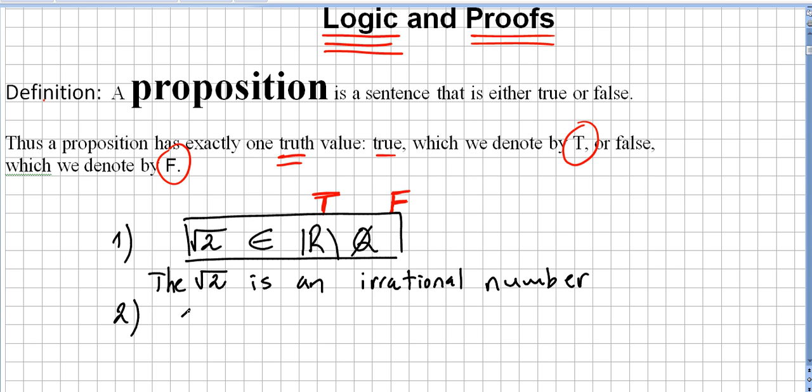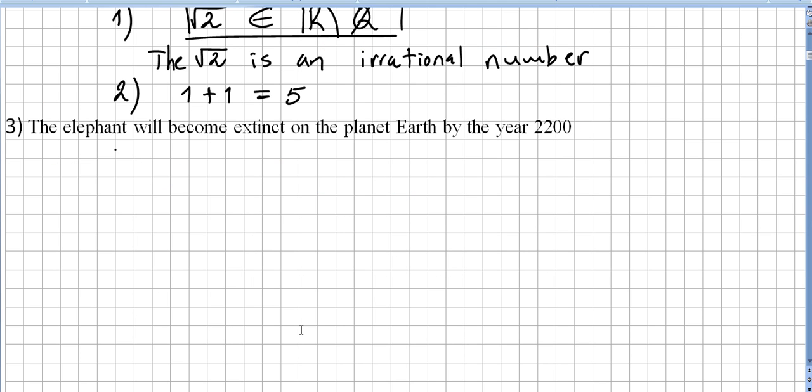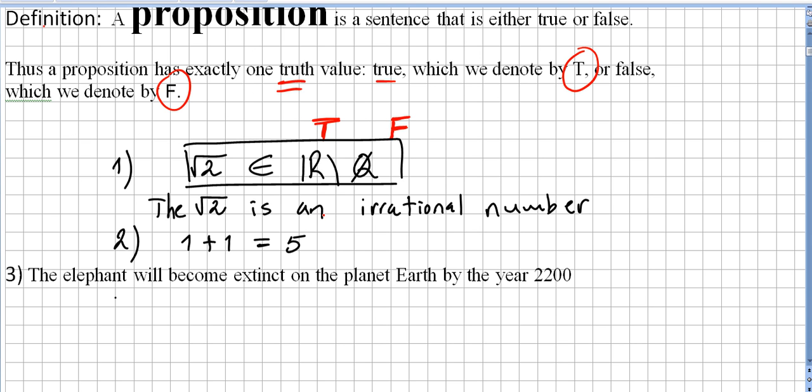Another proposition. Let us say 1 plus 1 equals 5. This is another proposition. The elephant will become extinct on the planet Earth by the year 2200. This is a third example of a proposition.